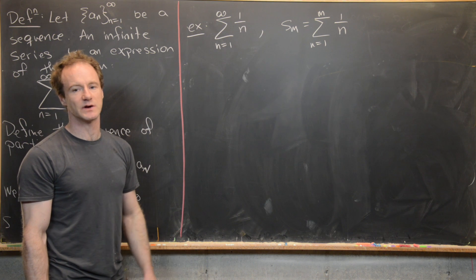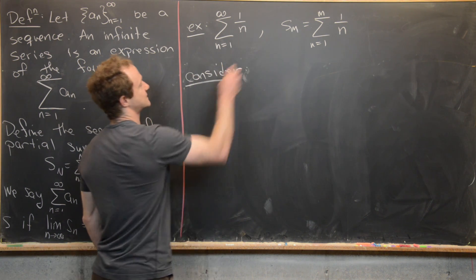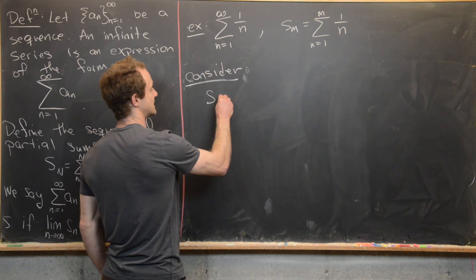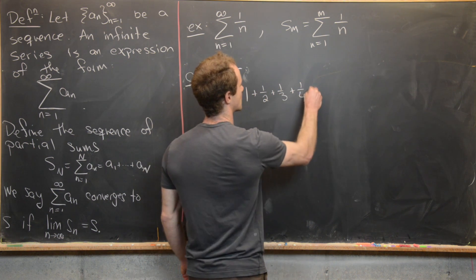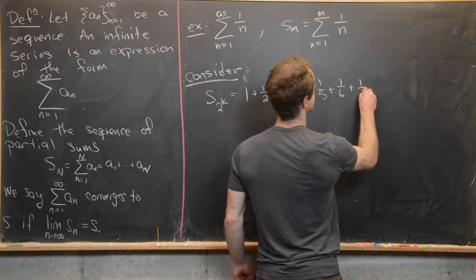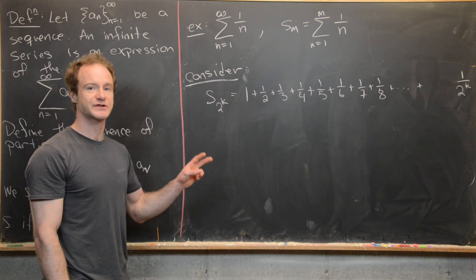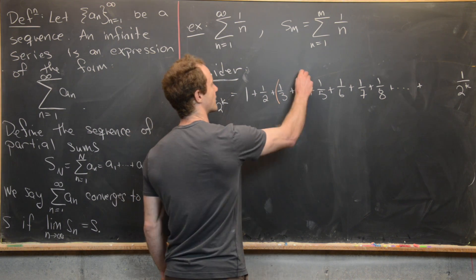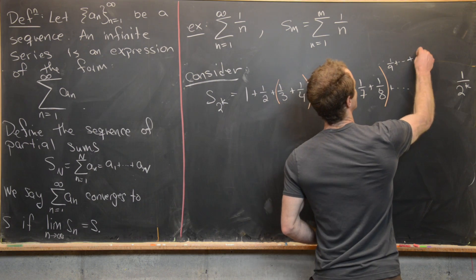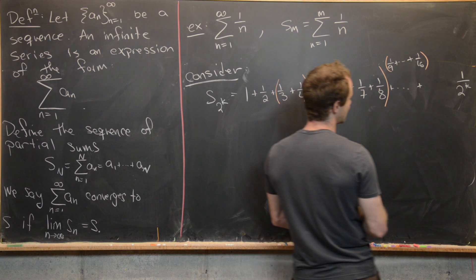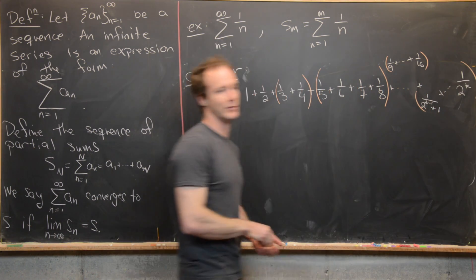The general trick is not to look at the nth term, but instead to look at a power-of-2 term of the sequence. Let's consider S sub 2^k, where k is some natural number. That equals 1 + 1/2 + 1/3 + 1/4 + 1/5 + 1/6 + 1/7 + ... all the way up to 1 over 2^k. The trick is to group certain terms together: group 1/3 and 1/4 together; group 1/5 through 1/8 together; group 1/9 through 1/16 together; and finally group 1 over (2^(k−1)+1) through 1 over 2^k together.